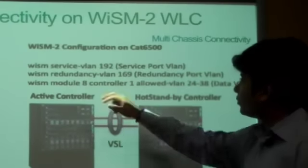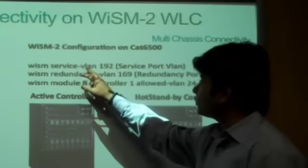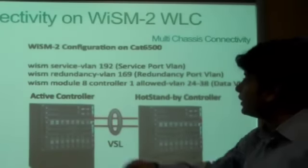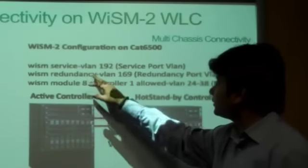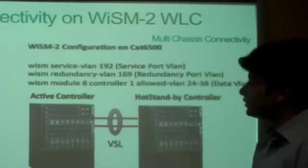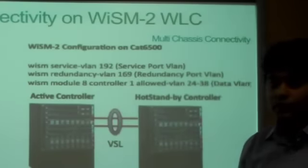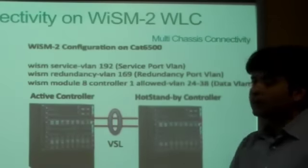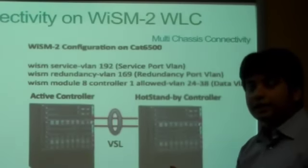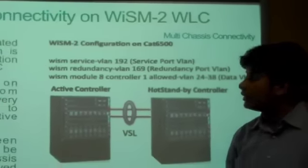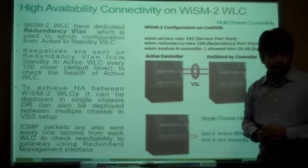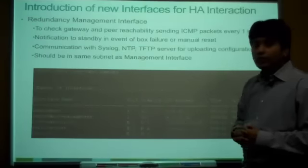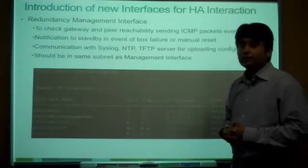From a configuration perspective, the same way we configure the service VLAN, we have to configure a redundancy VLAN — which is VLAN 169 in this example. We must make sure there is no data flowing in VLAN 169; it is dedicated exclusively for the redundancy VLAN. Now let's see what interfaces are introduced for APSSO interaction.